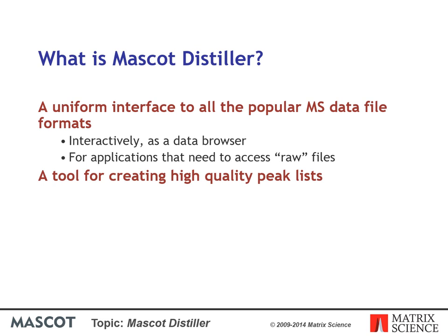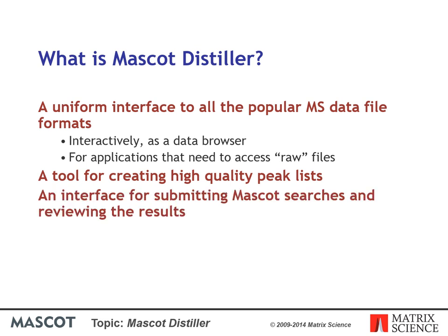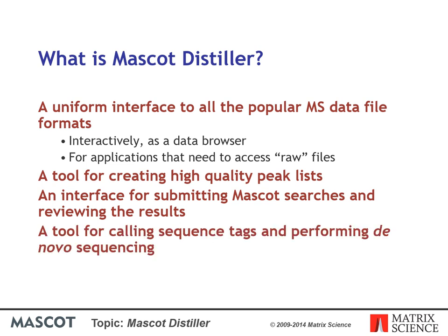Another reason for developing Distiller was to produce high-quality peak lists without having to constantly tweak peak detection parameters. Poor-quality peak lists translate into poor-quality Mascot scores. Distiller is also a powerful way to review Mascot search results, and if Mascot fails to get a match, you can perform de novo sequencing and interpret sequence tags for tag searches.